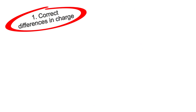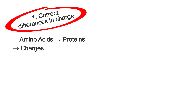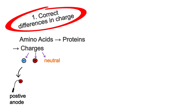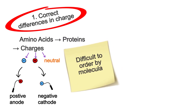First, we need to correct for differences in charge. Different proteins will have different amino acid compositions, which leads to different net charges that are neutral, positive, or negative. This means that if we apply an electrical field, some will migrate to the positive anode, and others will move to the negative cathode, which makes it very difficult to order proteins according to molecular weight and interpret the results.